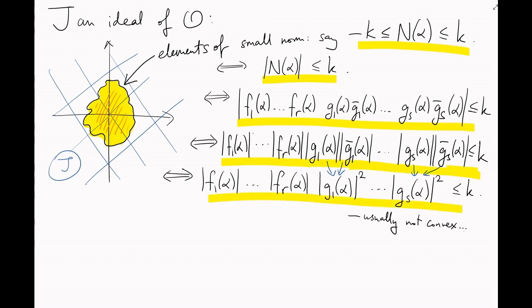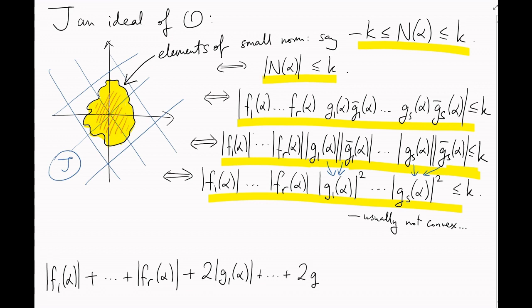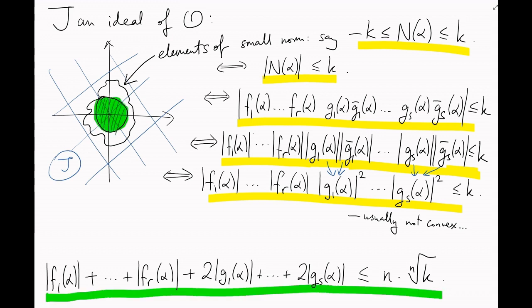Now, just like last video, this region usually won't be convex. So, instead, let's look at the smaller region given by the stricter inequality. Mod F1 of alpha plus mod F2 of alpha plus dots plus mod FR of alpha plus 2 mod G1 of alpha and so on up to 2 mod Gs of alpha is less than or equal to n times the nth root of K. Now, where has this come from? Well, this implies our original inequality by the AM-GM inequality and it's convex. Check that.